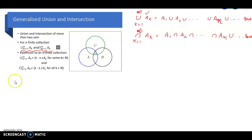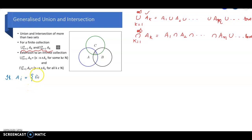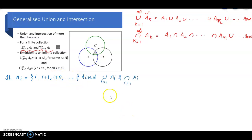This is the first example of generalized union and intersection. Suppose the sets are denoted by A-sub-i, where A-sub-i equals the set containing i, i plus 1, i plus 2, etc. Find union i equal to 1 to N of A-sub-i, and intersection i equal to 1 to N of A-sub-i.